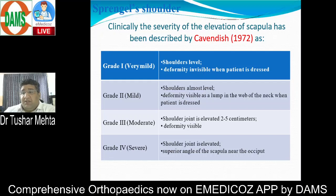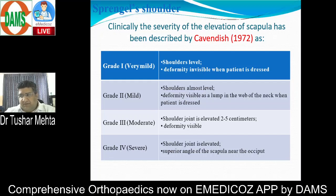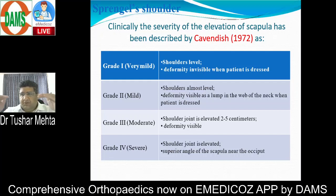Cavendish grading is an important clinical staging system, often asked in viva exams for Sprengel's deformity. It shows severity through four grades: Grade 1 (very mild), Grade 2 (mild), Grade 3 (moderate), and Grade 4 (severe). Cavendish grading is based upon two things: the level of shoulders relative to each other, and whether the deformity is visible with or without clothes on.